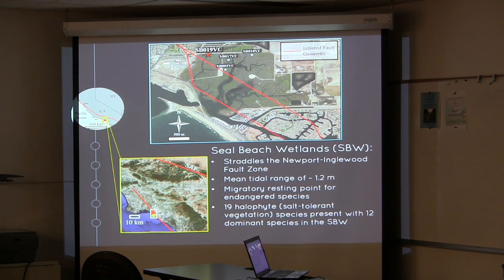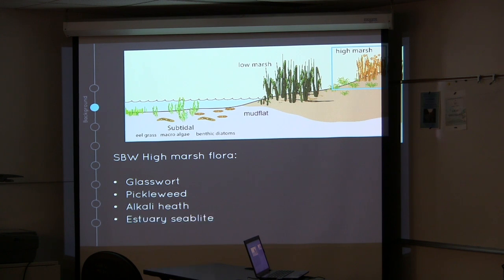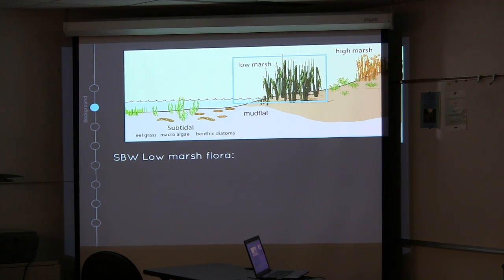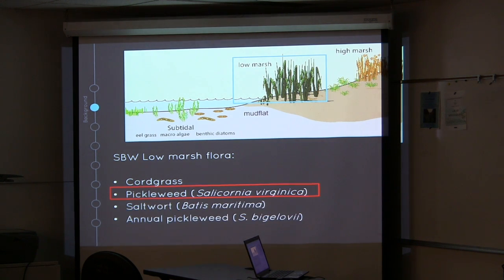There are 19 different species present with 12 dominant species in the Seal Beach wetlands. A few of the high marsh flora are glasswort, pickleweed, alkali heath, and estuary sea blight. The low marsh flora consists of cordgrass, pickleweed, and saltwort, where we looked at the stable carbon values for pickleweed later in the study.